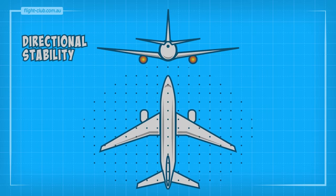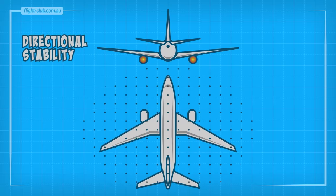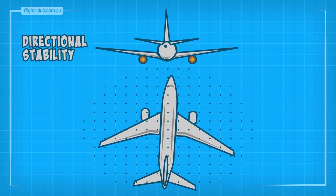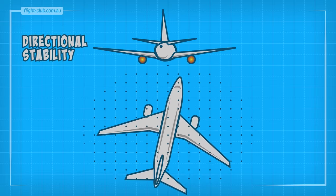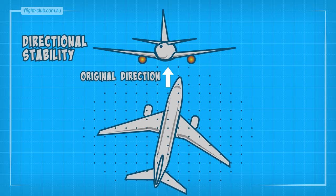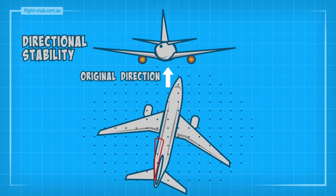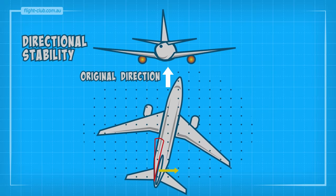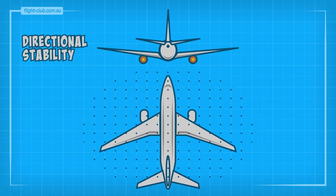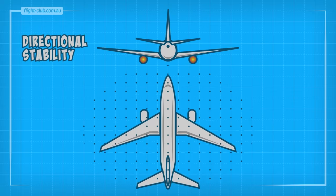Directional stability of an aeroplane is its natural ability to recover from a disturbance in the yawing plane. When disturbed into a yaw from its straight path, the aeroplane continues moving sideways in the original direction. The vertical stabiliser is now experiencing an angle of attack that generates a sideways-facing lift force which restores the aeroplane to its original position. The greater the vertical stabiliser area, the greater the directional stability of the aeroplane.